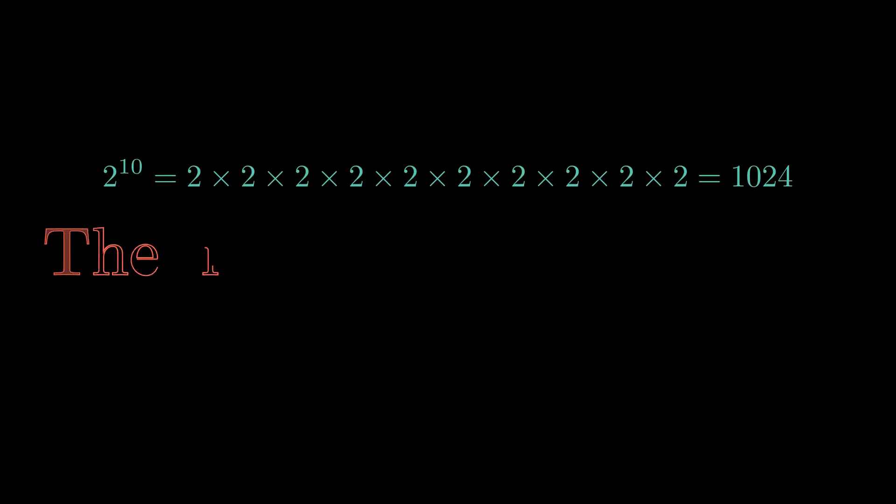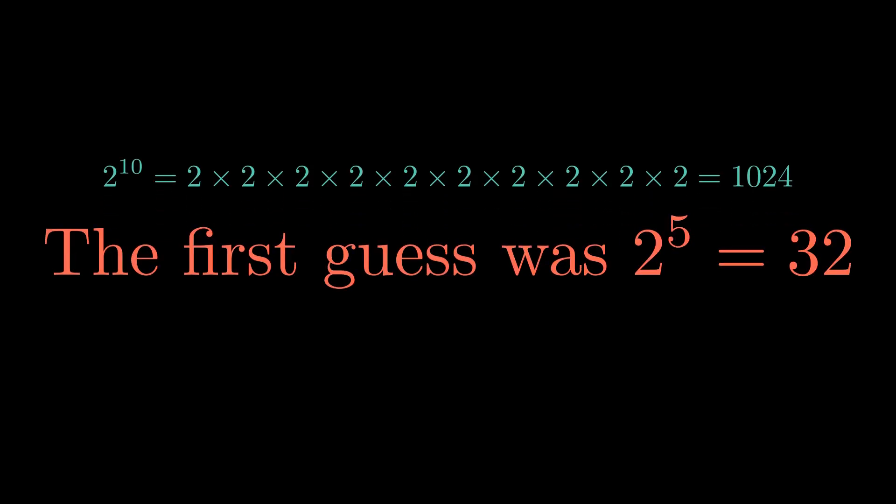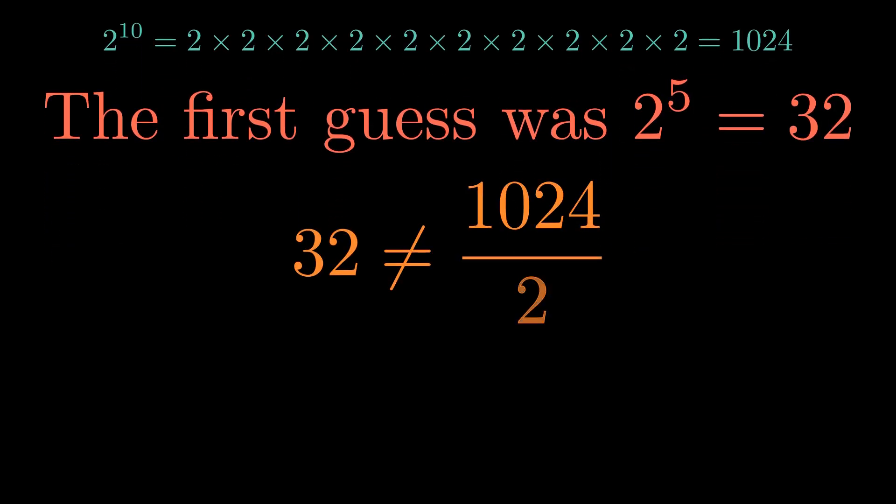We are not halving the exponent or the base. We are halving the entire number. First, let's find the actual value of 2 to the power of 10. It's 1024. The first guess, 2 to the power of 5, is 32. Clearly, 32 is not half of 1024, so this is not the right path.